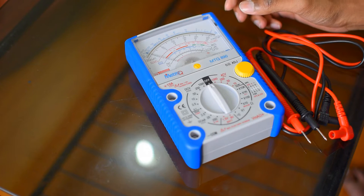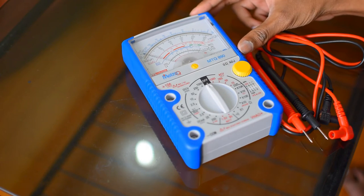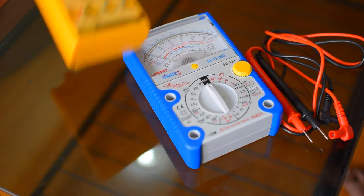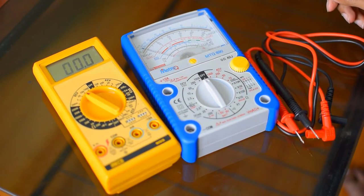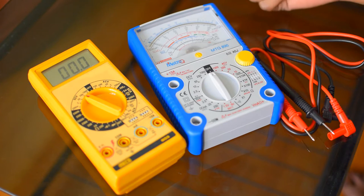There are two kinds of multimeters available. One is analog multimeter, which I am showing to you currently, and the other is a digital multimeter. This is a digital multimeter. You can use any one of the multimeters, you can go either with the analog one or the digital one according to your convenience. Both have their own advantages and disadvantages.